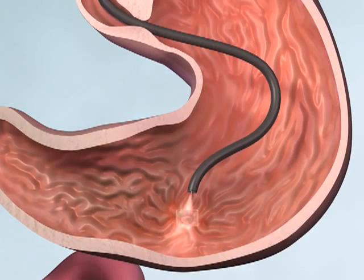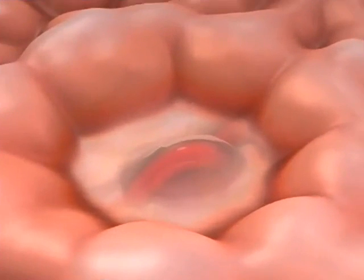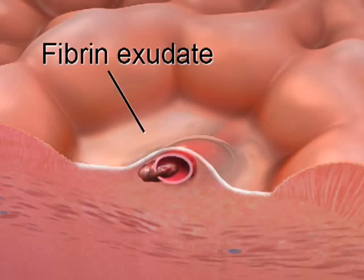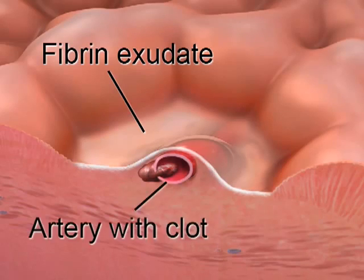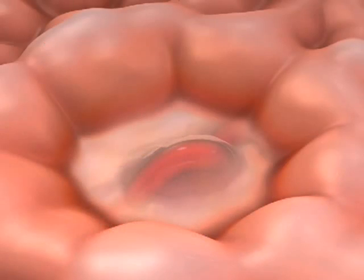The peptic ulcer has eroded through the mucosa and submucosa into an underlying artery that produces the bleeding. The ulcer base is covered by a fibrin exudate. The non-bleeding visible vessel, composed of the artery and clot plugging the defect in the side wall of the artery, appears as a nipple-like protuberance in the ulcer base.